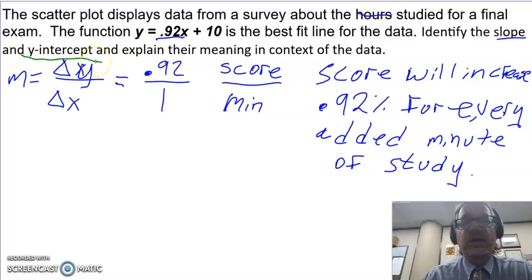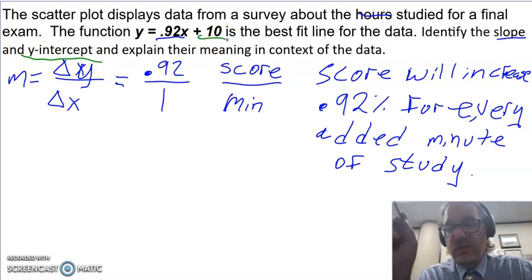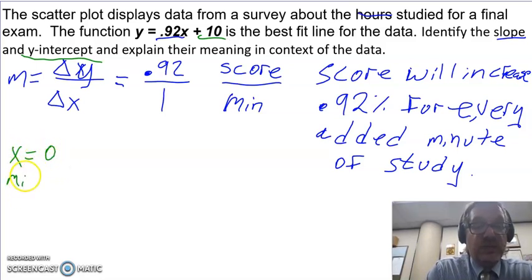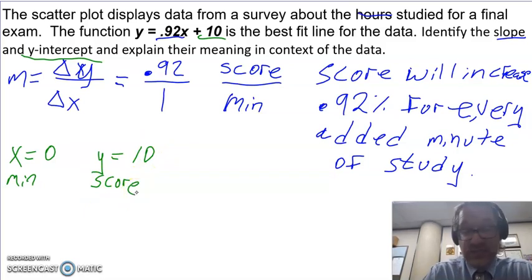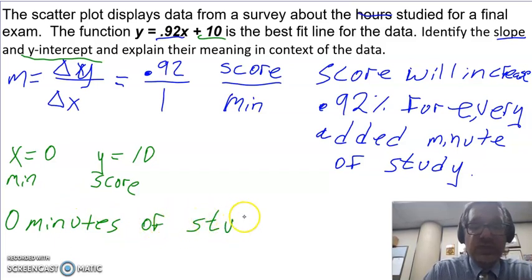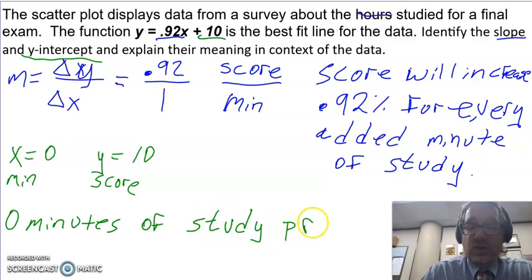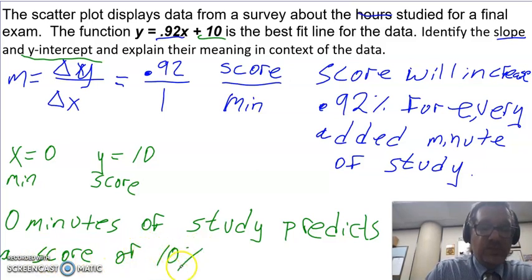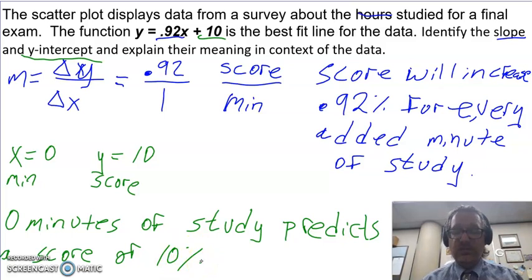Well, now my next question is explain what the y-intercept is. Now, if you remember from this, I was right on. I don't have to go back and change it. My y-intercept is our starting value when x is 0. So when x equals 0 and x is my minutes, y will equal 10, and y is my score. So in context, what this means, 0 minutes of study, so 0 minutes of study, predicts a score of 10%. And that's what our line of best fit tells us.